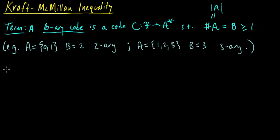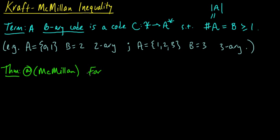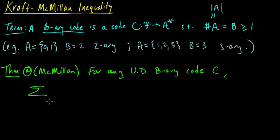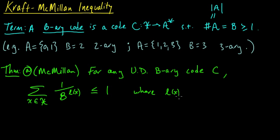Now with that out of the way, we are ready for the theorem, which has two parts. Part A is due to McMillan. McMillan says: for any uniquely decodable b-ary code, we have the following inequality — the sum over all elements x in our source alphabet X of 1 over b to the l(x), where l(x) is the length of the codeword for x, is less than or equal to 1.